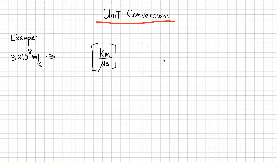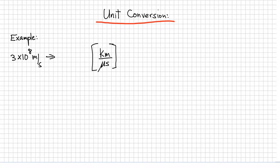For unit conversion, I want to start with this example. Let's take the speed of light, which is 3 times 10 to the 8 meters per second, and imagine I want to convert it to kilometers per microsecond. I want to teach you the bracket system. The bracket system always works.